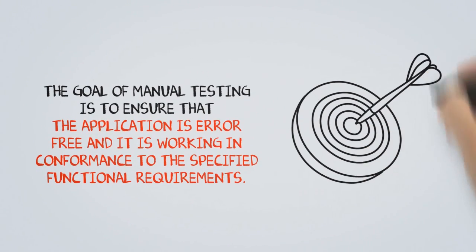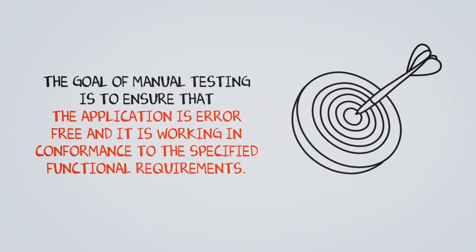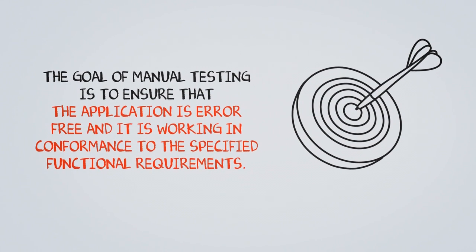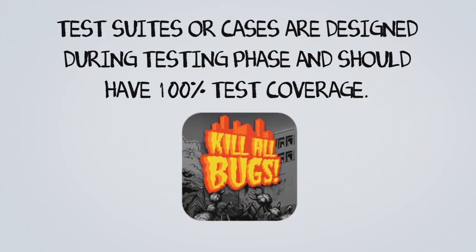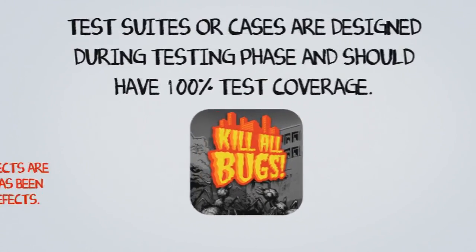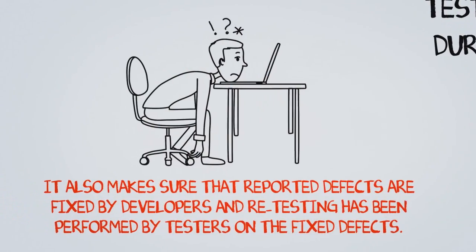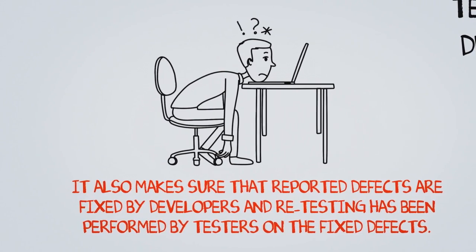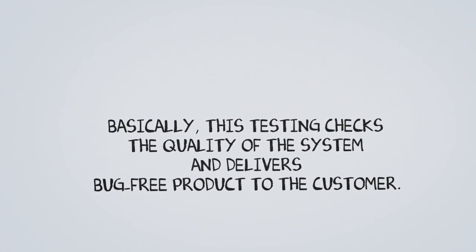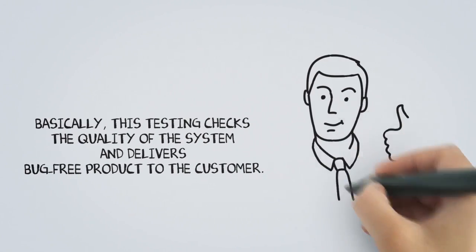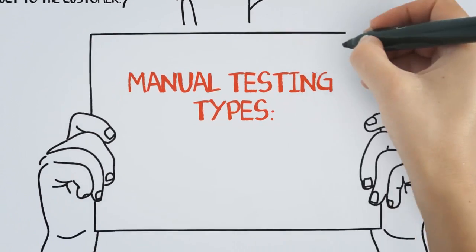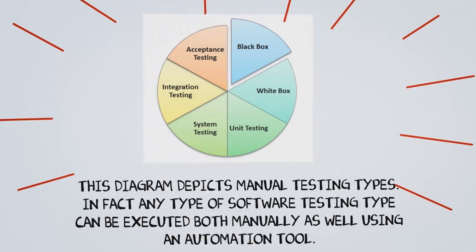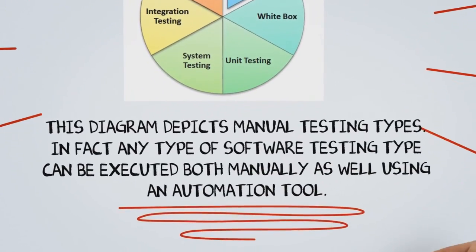The goal of manual testing is to ensure that the application is error-free and working in conformance with specific functional requirements. Test suites or cases are designed during the testing phase and should have 100% test coverage. It also ensures that reported defects are fixed by developers and retesting has been performed by testers on the fixed defects. This testing checks the quality of the system and delivers a bug-free product to the customer. Any type of software testing can be executed both manually as well as using an automation tool.